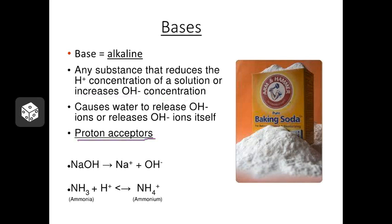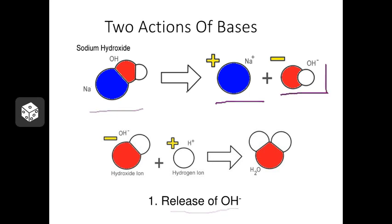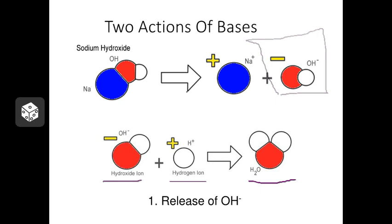Let's look at a couple of examples of bases. One way a chemical can act as a base is by releasing hydroxide ions. For instance, sodium hydroxide: when it dissociates, it breaks into sodium ions and hydroxide ions — that's our basic component. This is important because hydroxide ions can interact with hydrogen ions to form water. So if there's any acid in a solution, the hydroxide ions will neutralize it and form water. A base here is acting by removing hydrogen, and it can do that because it released hydroxide.